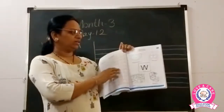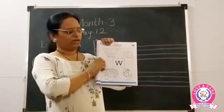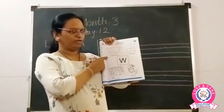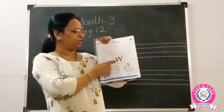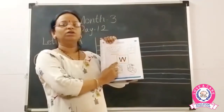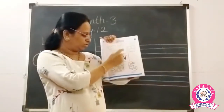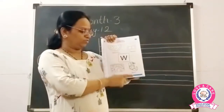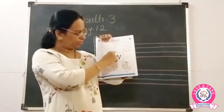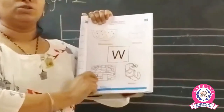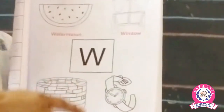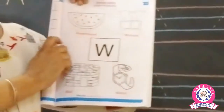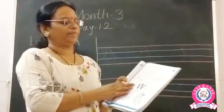Look here — color the pictures. W for watermelon, W for green glow, W for well, W for watch. So here we can color the pictures: watermelon, watch, well, and window.